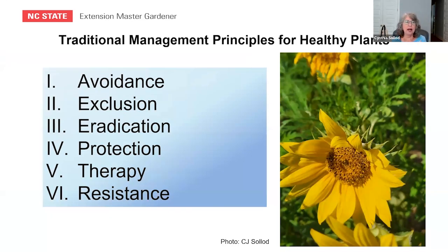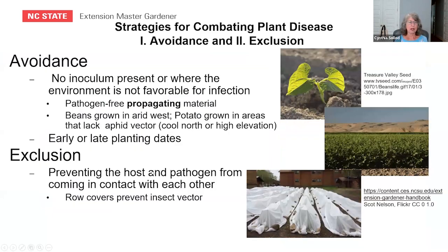Traditional disease management principles are very similar to IPM, with the difference that they were once looked at individually rather than as an integrated process. These principles include avoidance, exclusion, eradication, protection, therapy, and resistance. Avoidance and exclusion are similar — basically keeping the pathogen or pest away from your crop. Early or late planting dates can be a great way to avoid the pest. Starting healthy with pathogen-free propagating material is another way — farmers can grow clean seed in environments lacking the pathogen, such as growing beans in the dry West where certain diseases aren't present.